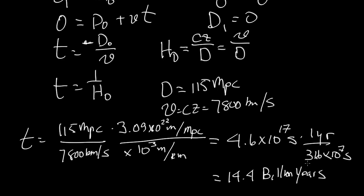So in other words, if a galaxy is moving away from us at 115 megaparsecs, and is traveling at 7,800 kilometers per second, that galaxy would have been where we were 14.4 billion years in the past.